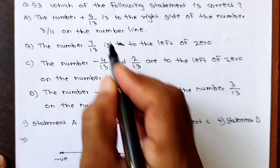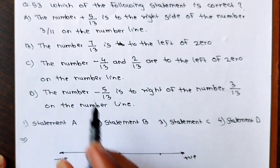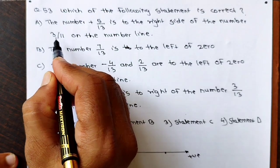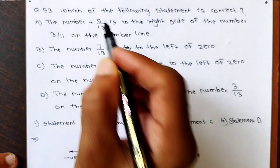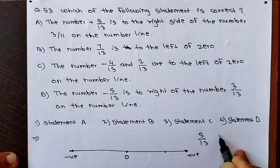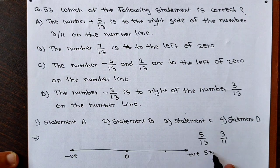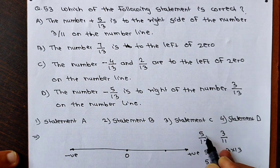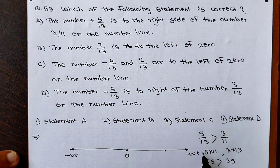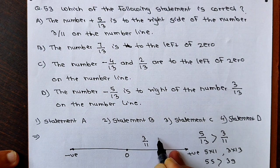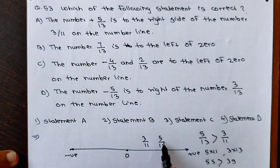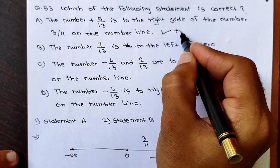To find which is greater, take cross multiplication: 5 × 11 = 55 and 3 × 13 = 39. Since 55 > 39, the number 5/13 is greater, so it lies to the right of 3/11. The statement says '5/13 is to the right side of 3/11' — this statement is true and correct.